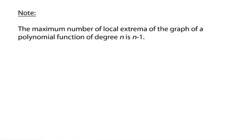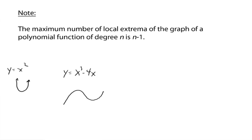The maximum number of local extrema of the graph of a polynomial function of degree n is n minus 1. Think about y equals x squared — it has 1 local extrema, the vertex. And if you graph y equals x cubed minus 4x, you get something with 2 extrema: a local max and a local min. The degree is 3, and the maximum number of local extrema is 2. Note that y equals x cubed has neither a max nor a min, but we're talking about the maximum number it could have — always 1 less than the degree.